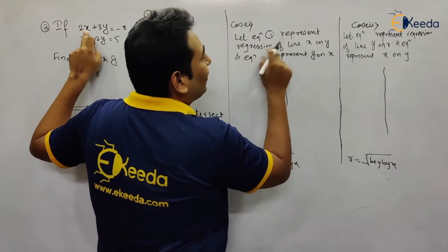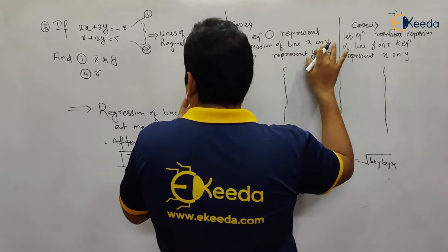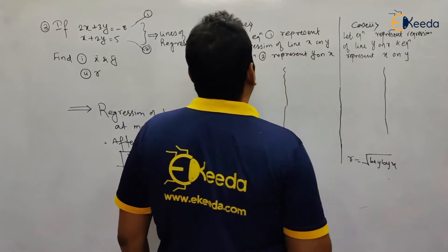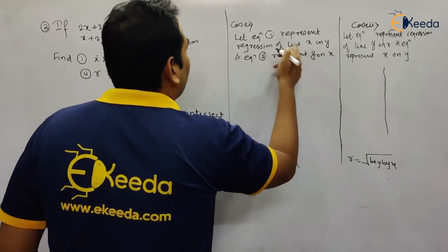Let equation 1 represent regression of line x on y and equation 2 represent regression of line y on x.